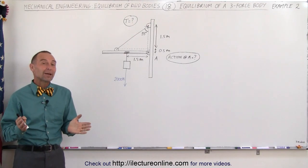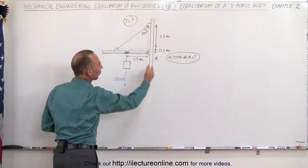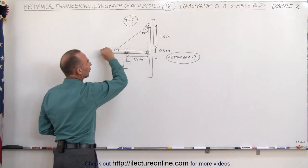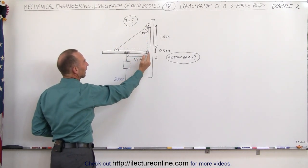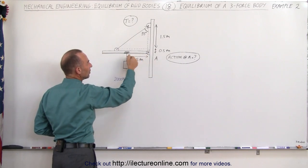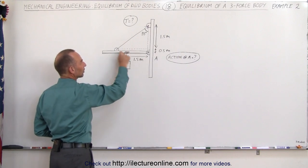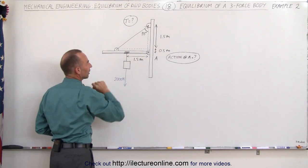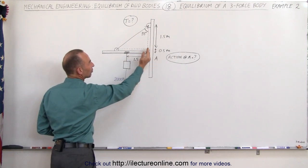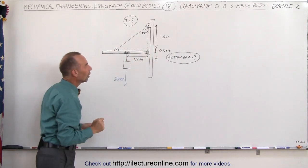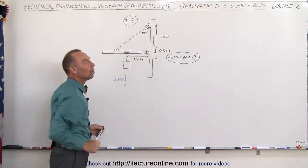Welcome to ElectronLine. Here's our second example of how to solve a three-force body problem. We have a vertical beam or post on which a horizontal beam is attached, kept in place by a cable. It's like a crane, where a crate with a weight of 2,000 newtons is attached with a cable to a set of rollers that can roll back and forth on the beam. When the crate is at a distance of 1.5 meters from the support where the beam rests on the post, what will be the tension in the cable and what will be the action at point A?